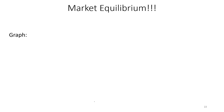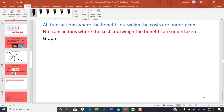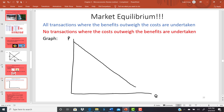Let's go ahead and draw this market equilibrium once again using different colors. We have a vertical axis for price and a horizontal axis for quantity. We'll have a downward sloping demand curve representing that buyers prefer to buy more at lower prices, and an upward sloping supply curve representing that sellers like to produce and sell more at higher prices. Where those two curves intersect gives us Q-star and P-star.